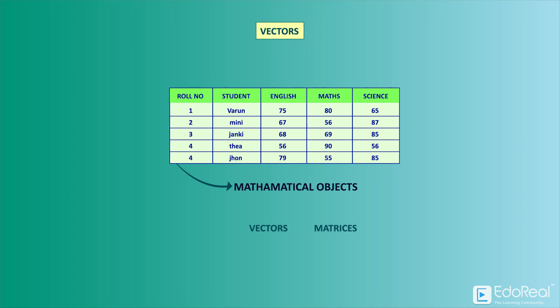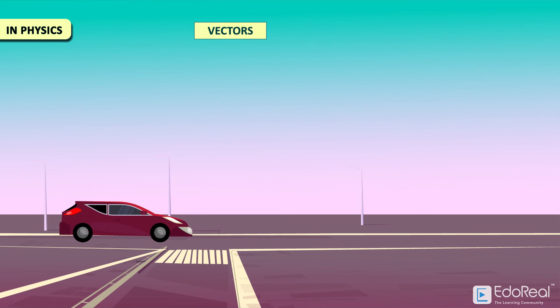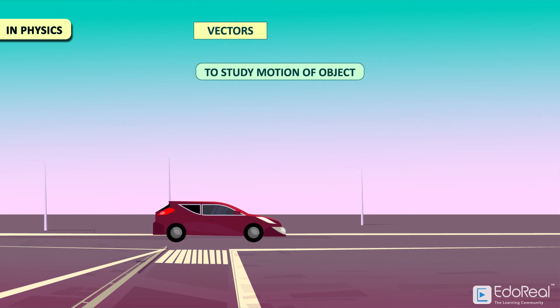The rows and columns can be treated as vectors. The association of each student with marks in a particular subject gives us a matrix. In physics, vectors are useful to study the motion of an object. A vector is a quantity that has both magnitude and direction.